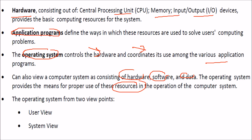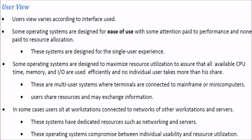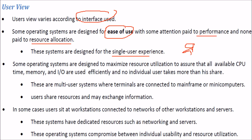There are two views of the operating system: the user view and the system view. The user view varies according to the interface being used. Some operating systems are designed just for ease of use, with less emphasis on performance or resource allocation — which is fine for a single user.